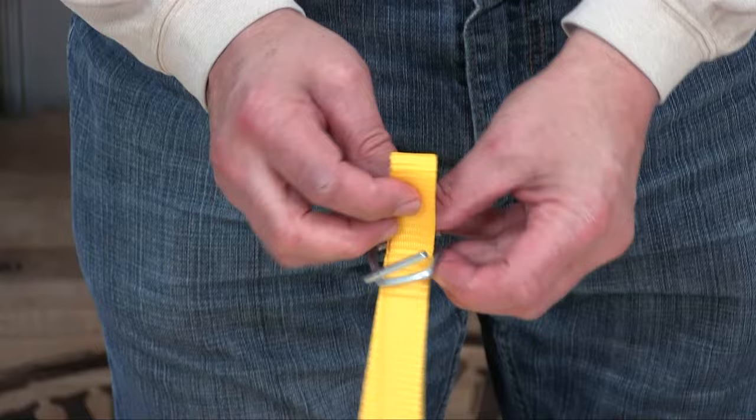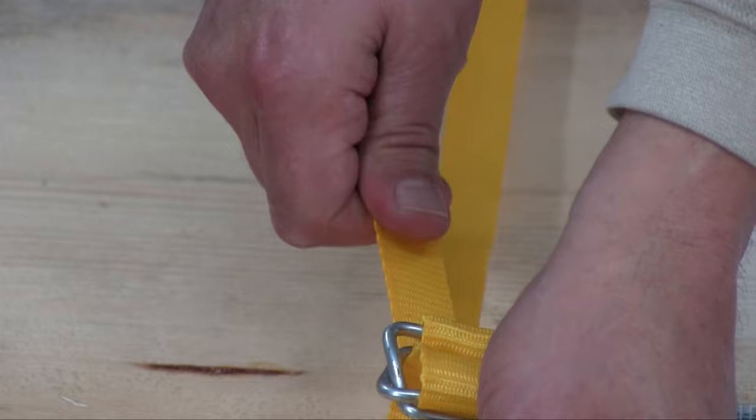Loop strapping around remaining open leg of buckle. Again, make sure the strap on top is the shorter end. Pull loop around the leg.